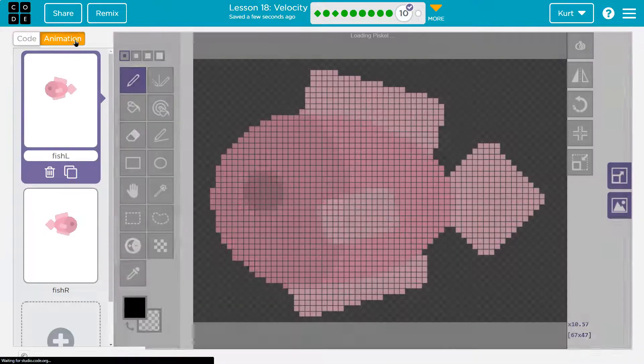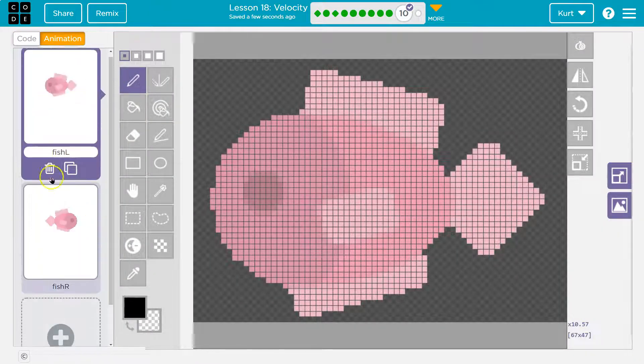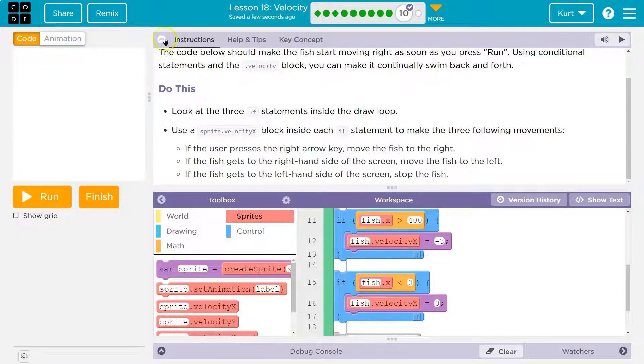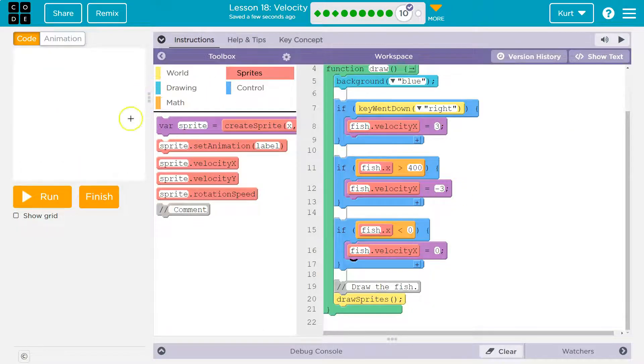I really don't like it swimming backwards, though. Oh, look, they even have fish R, fish L. We're going to put these in there too, because it makes sense. So instead of swimming backwards, when I make them start swimming to the left, I'm going to do a set animation.